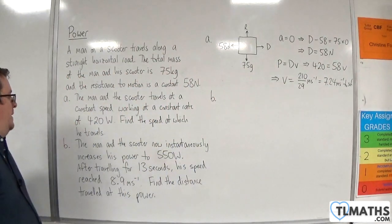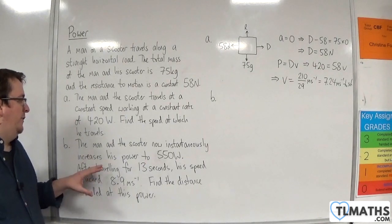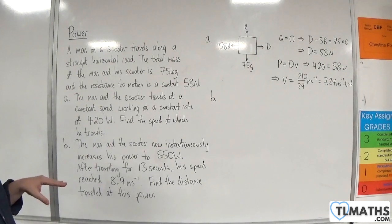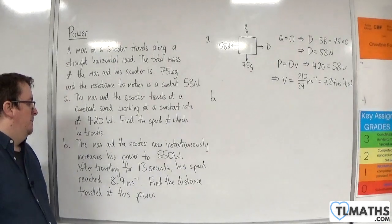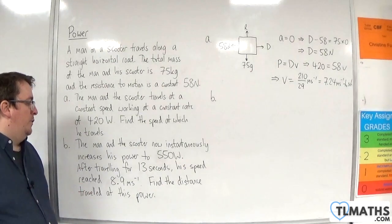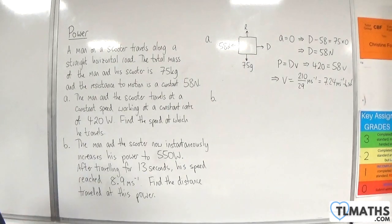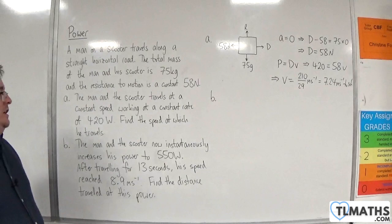Now, part B. The man on the scooter now instantaneously increases his power to 550 watts. After travelling for 13 seconds, his speed reached 8.9 meters per second. Find the distance travelled at this power. Now the acceleration cannot be assumed to be constant, so you can't use SUVAT here.